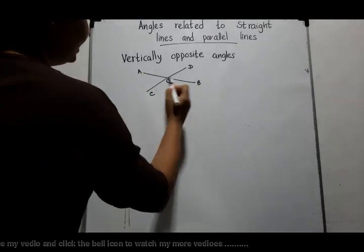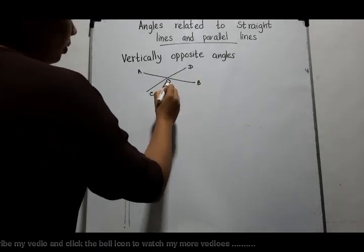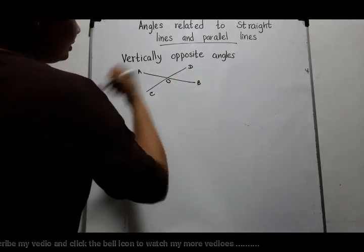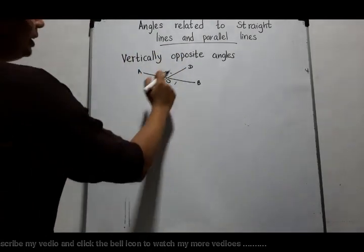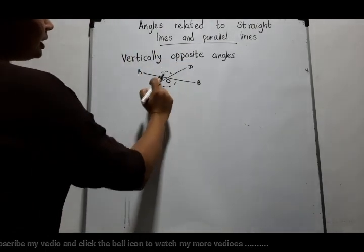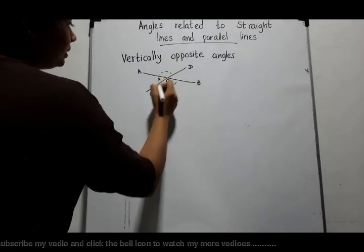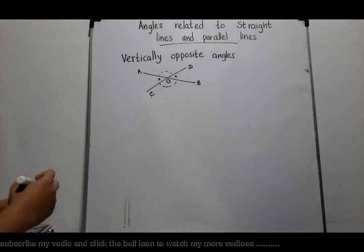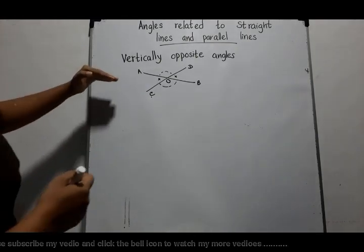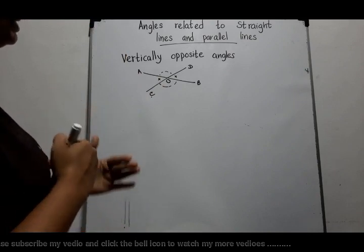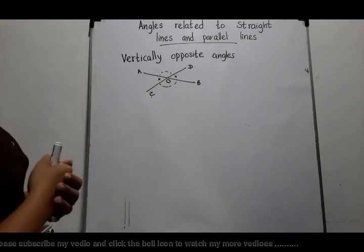When two straight lines AB and CD intersect each other, the formed vertically opposite angles are equal in magnitude. Here, AB and CD intersect at O. We know angle AOD equals angle COB, and also angle AOC equals angle BOD. Now, we are going to check whether this statement is correct by proving the theorem.